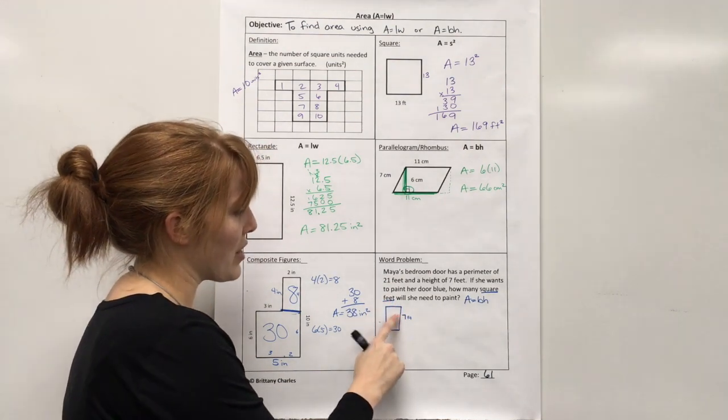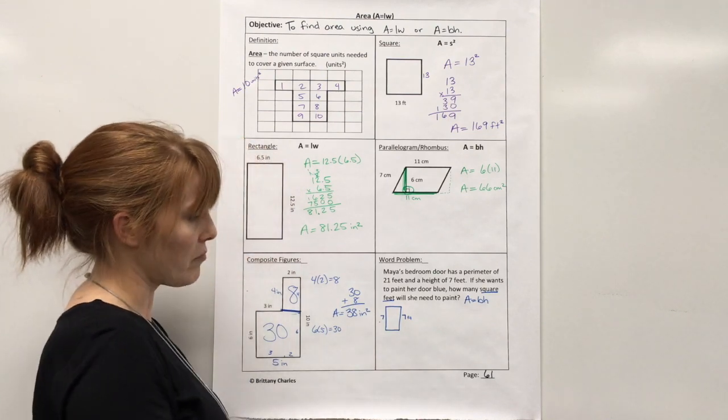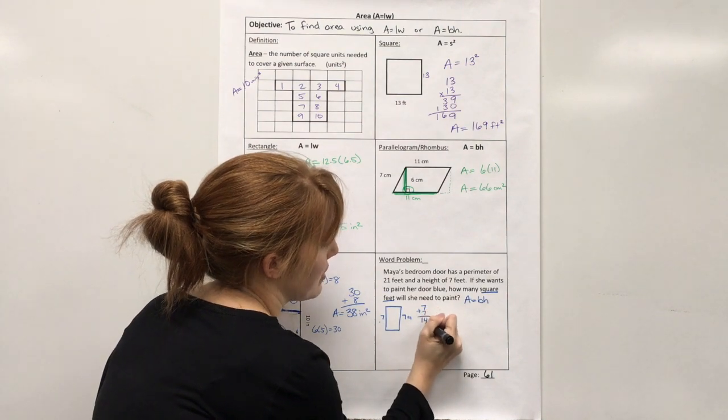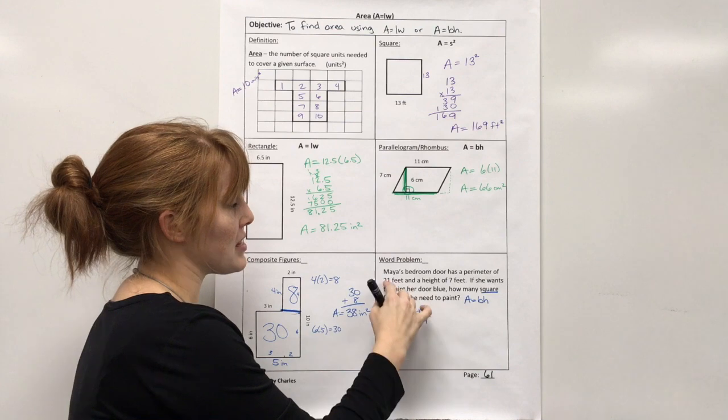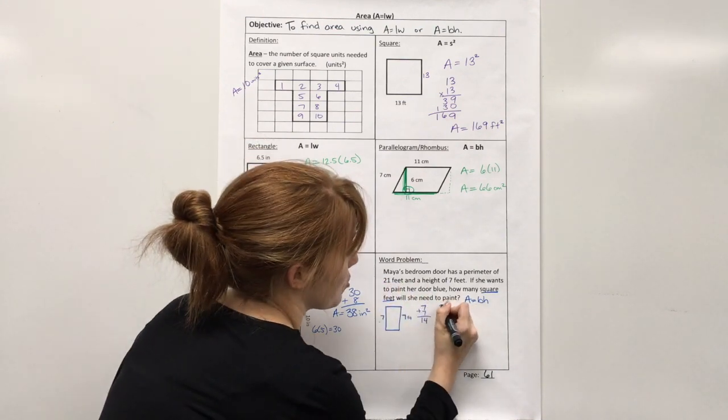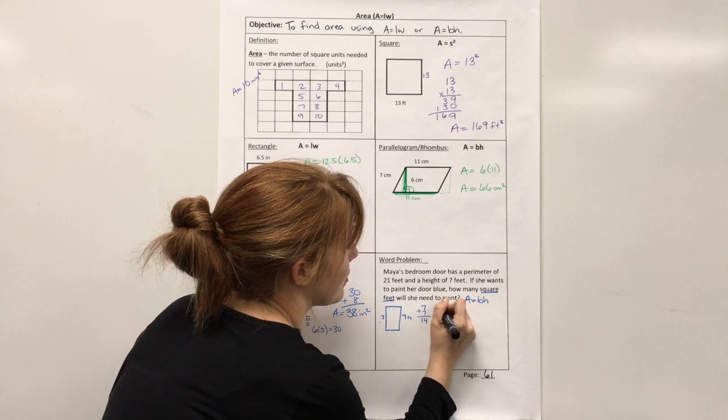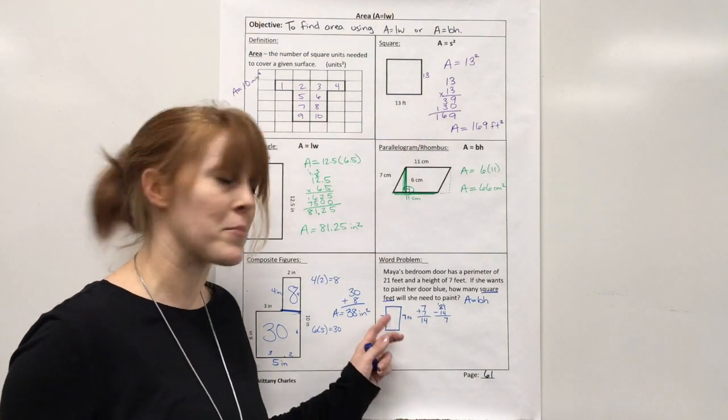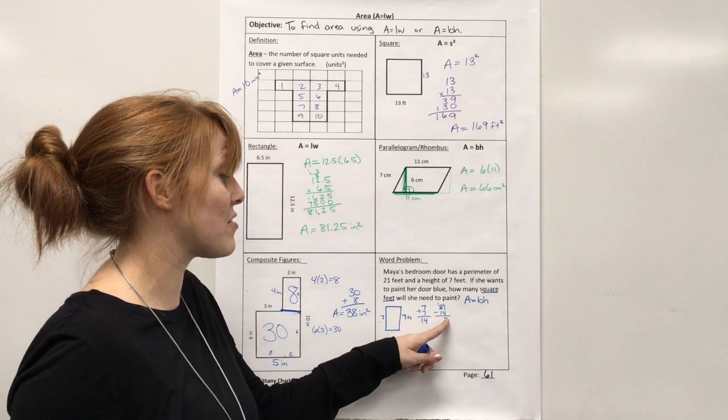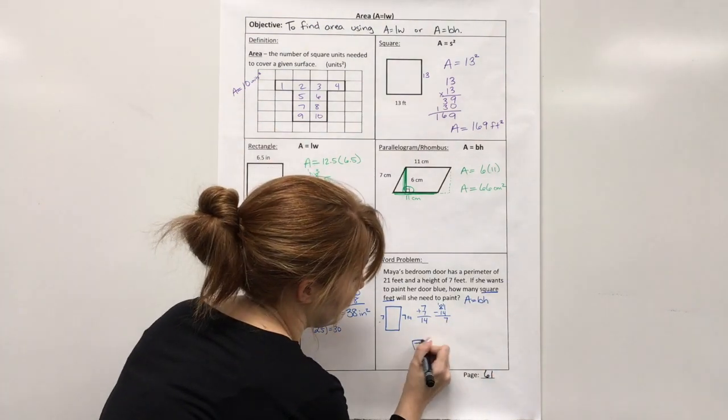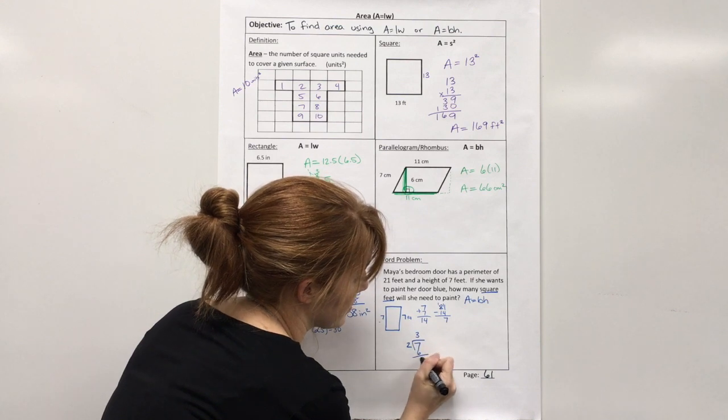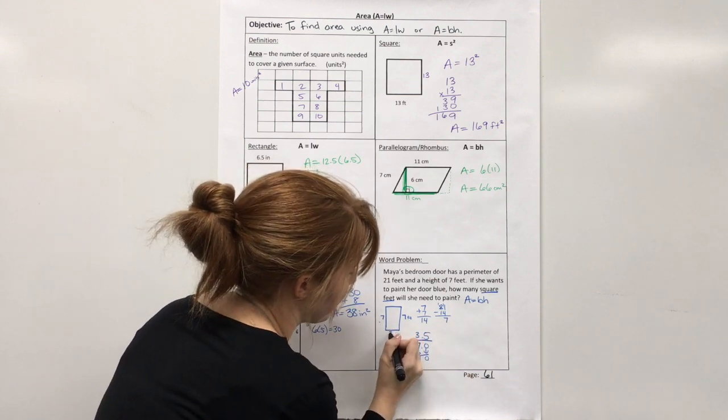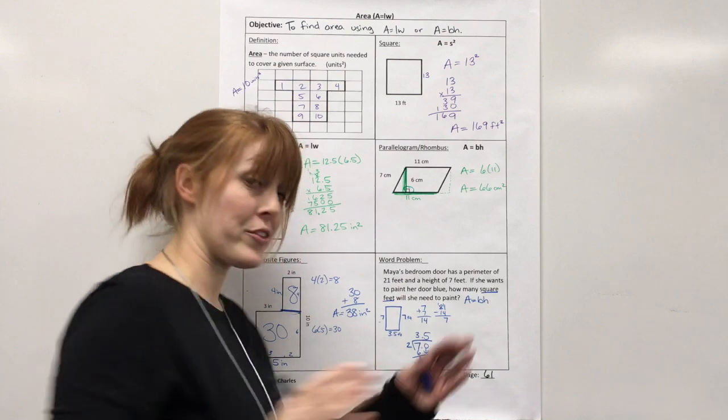So, if the whole way around is 21, well, I know at least that this side would also be 7. So, first I'm going to add these two sides. So, 7 plus 7 would be 14. So, that already is taken care of. So, I'm going to subtract these to see what's left over for this. So, 21 minus 14. 11 minus 4 is 7. So, I have 7 feet left over. Now, don't say that this width is 7. Remember, you still have two sides here. So, I need to divide this by 2. And that would go in 3 times, which is 6. Add a decimal and a 0. That goes in 5 times. So, 3.5 or 3.5 feet is how wide the door is.